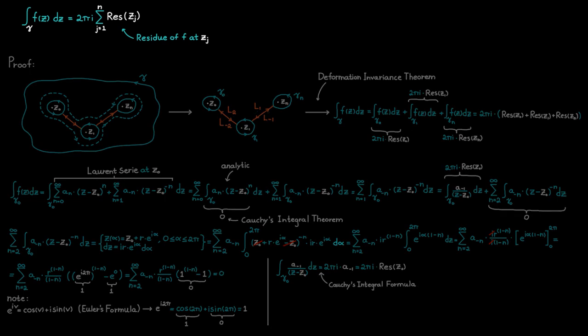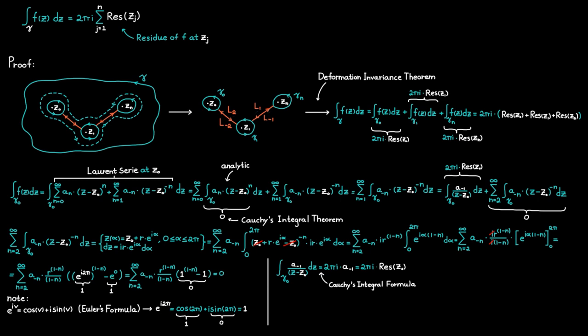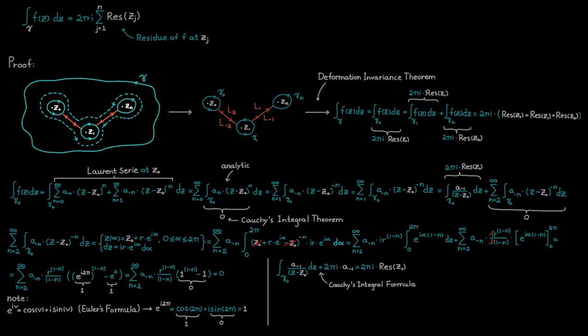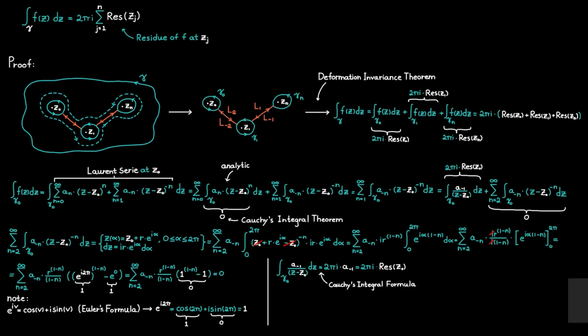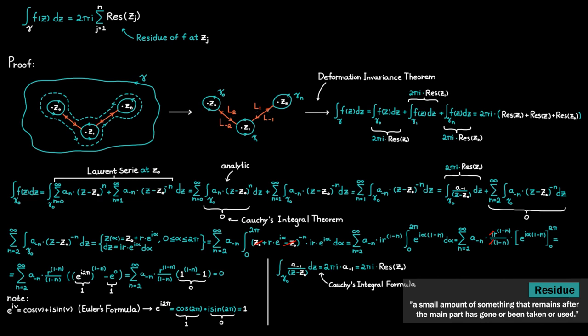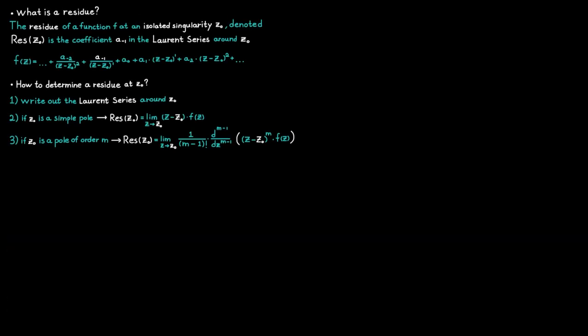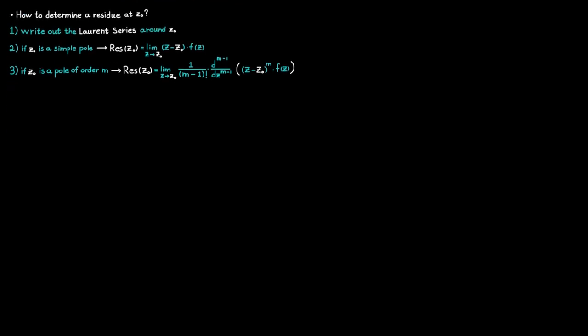I think it's actually really fitting that the only thing left standing after integrating along the big contour gamma are the residues — that means the name 'residues' is actually very suitable for its properties. Last time we introduced three different options for determining the residue at a point, and now we'll prove the last two options. I'll also show that all three options are in fact the same option in disguise, since all of them require writing out the Laurent series expansion and determining the coefficient a_{-1}.